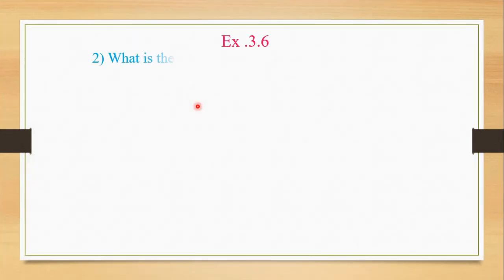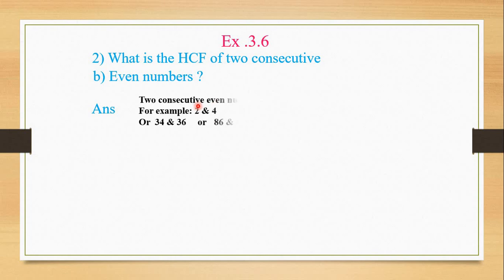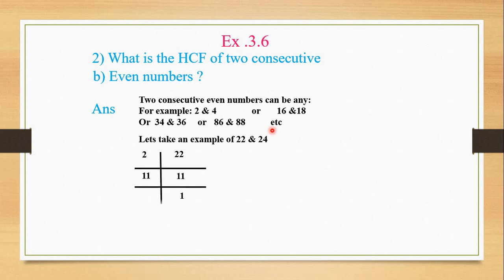Let's begin Exercise 3.6, question 2b: two consecutive even numbers. Two consecutive even numbers can be anything. Here are examples of what two even numbers could be: 2 and 4, 16 and 18, 34 and 36, 86 and 88, etc.